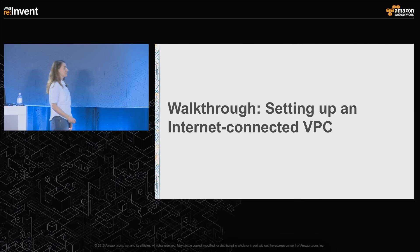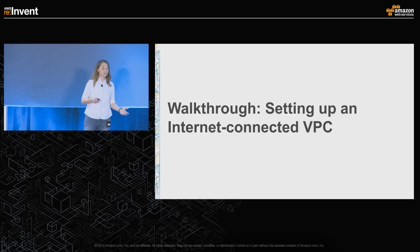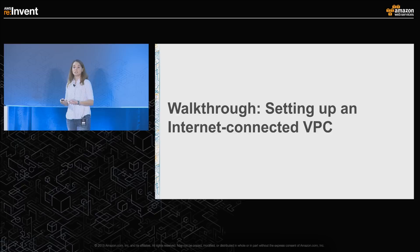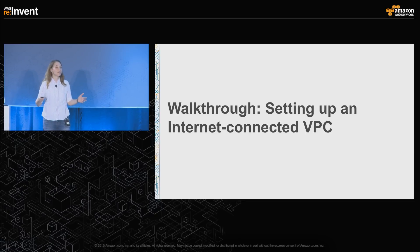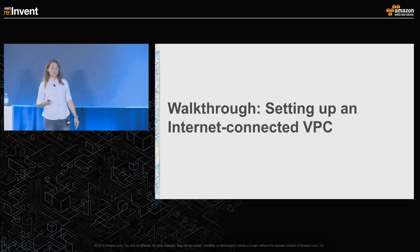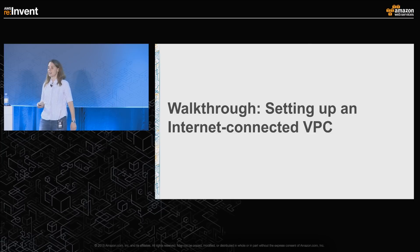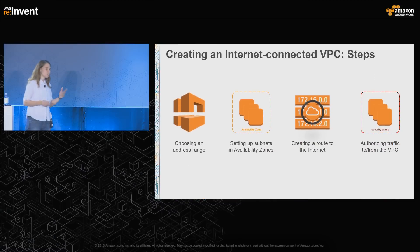Let's get started setting up an internet-connected VPC. For those of you who have a new account with us since about late 2013, this VPC I'm going to set up — you already have one in your account. We have created one for you. It's called your default VPC. When you go and launch EC2 instances, the instances just show up as part of your VPC. You can create other VPCs too. But I want to walk you through it anyway so you can really understand what it's made out of. We're going to do this in four steps.